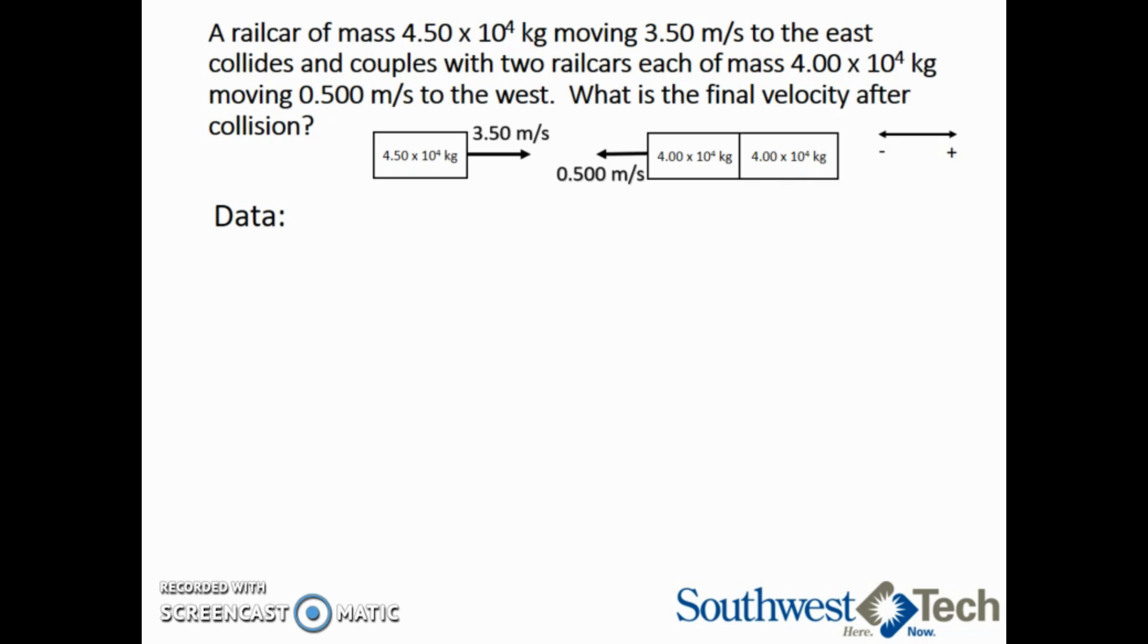We want to list all of the data that we are given. We know M1 is 4.5 times 10 to the 4 kilograms and V1 is 3.5 meters per second. M2 is the total mass of the two railcars which is 8 times 10 to the 4 kilograms. And these cars are traveling at negative 0.5 meters per second.